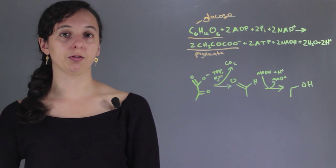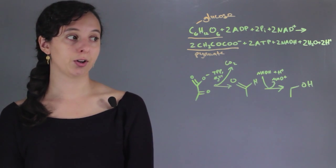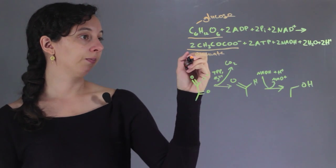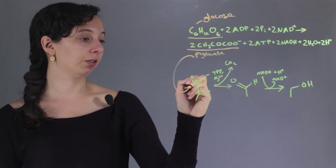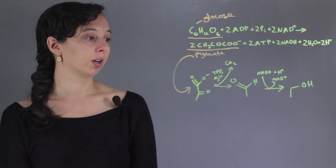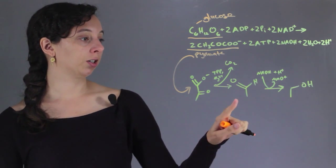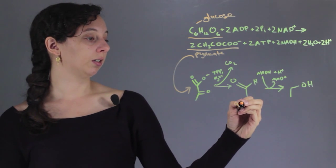So first we convert glucose into pyruvate. Once we have pyruvate, this is the same structure just drawn differently as right here, and the first step is to have pyruvate. It gets turned into this chemical called acetylaldehyde.